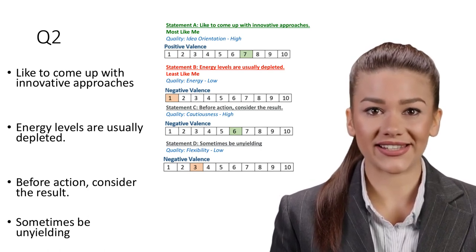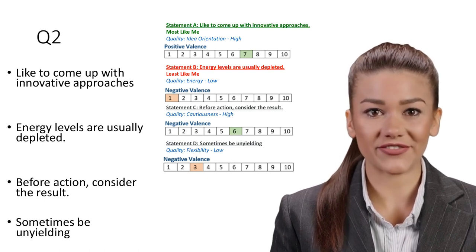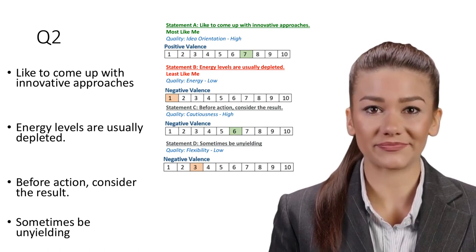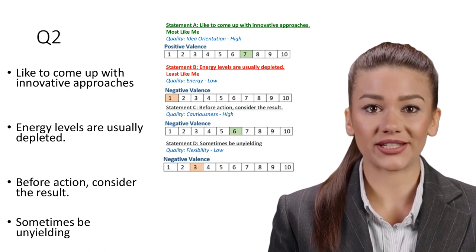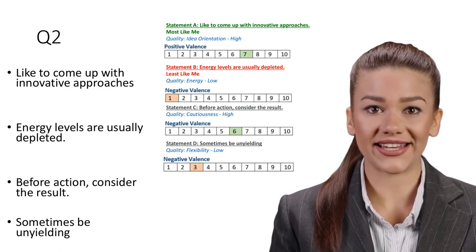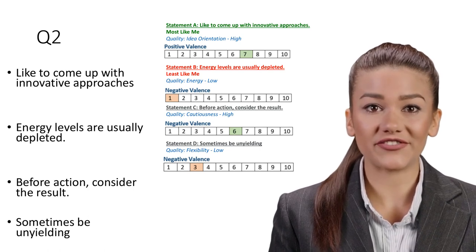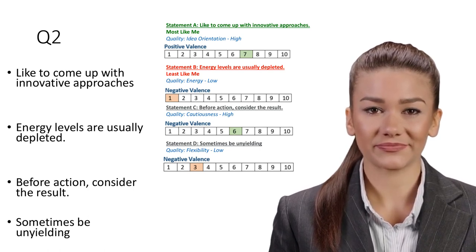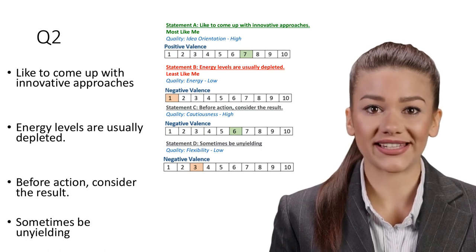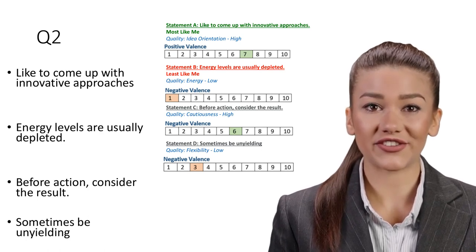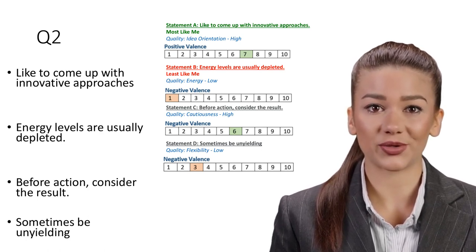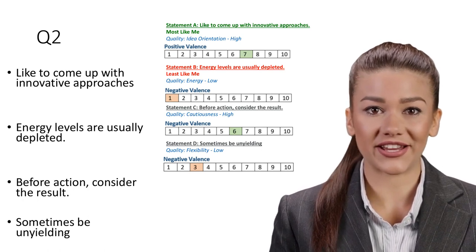Statement D: Sometimes be unyielding. Quality: Flexibility, Low. Successful staff members are willing to be flexible, accommodating, and to step in as needed to help and support their colleagues. A supportive and flexible approach is not demonstrated in this statement. This statement on flexibility is similarly negative to statement B that covers being energetic. This quality will thus be allocated points in other questions.